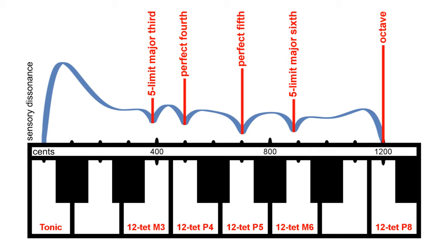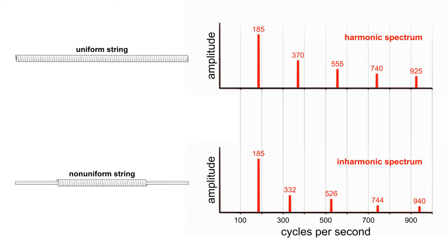Harmonic sounds are generated by uniform one-dimensional vibrating systems, like uniform strings and air columns. This is illustrated in the top pictures. But when the string is non-uniform, that is, when the thickness and or density of the string changes over the length of the string, then the overtones occur in an inharmonic relation.